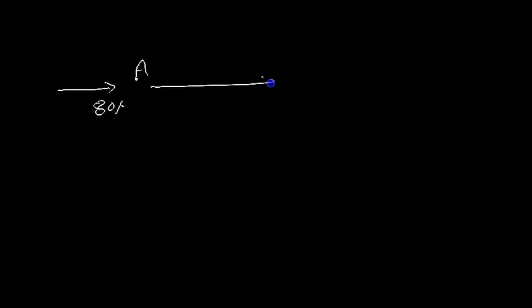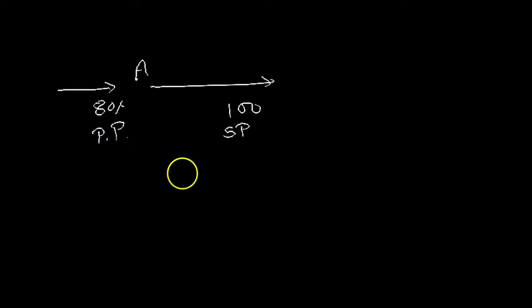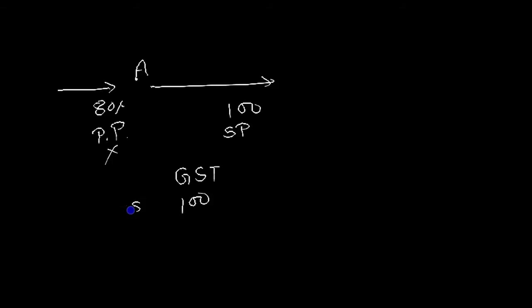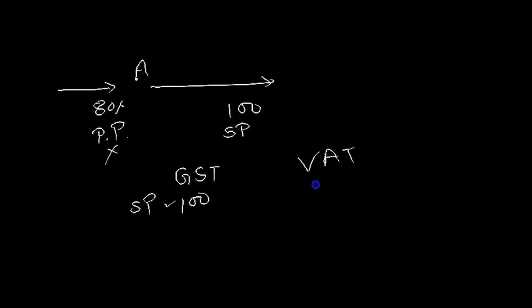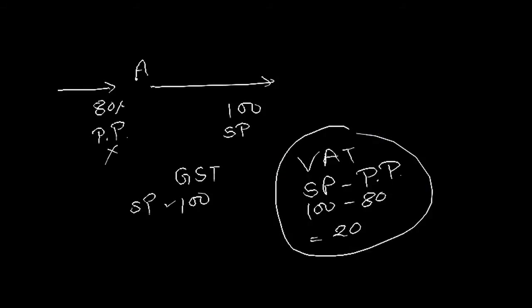We can see this with the help of an example. Suppose A purchases goods for ₹80 and sells these goods at ₹100. Under the old GST, tax was levied directly on the sale price of ₹100. But under VAT, the tax is levied on value addition: ₹100 minus ₹80 equals ₹20 — so tax is on ₹20 only.